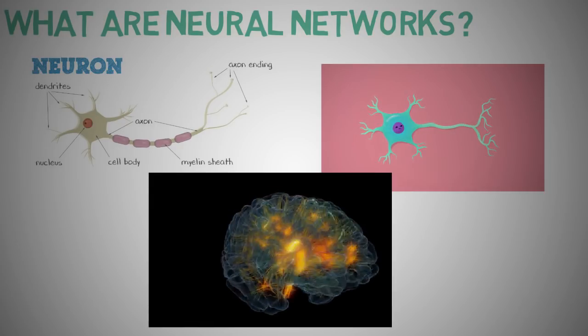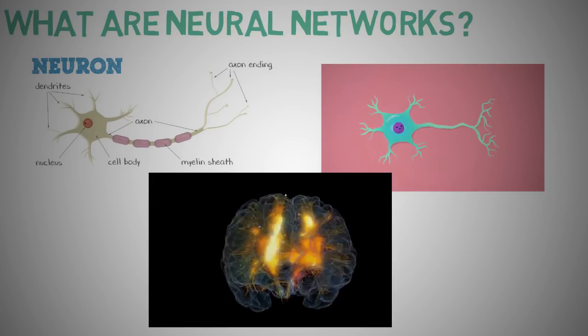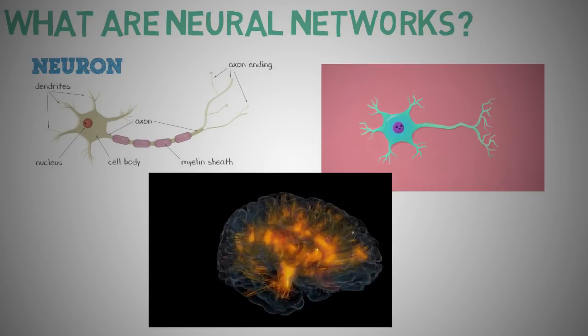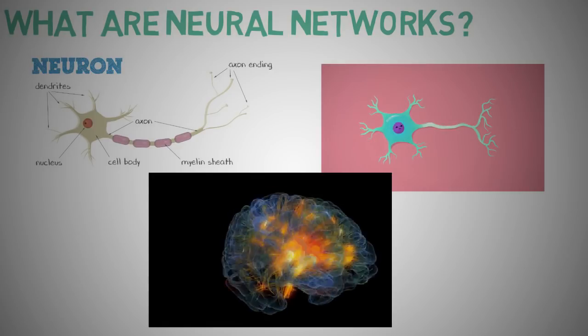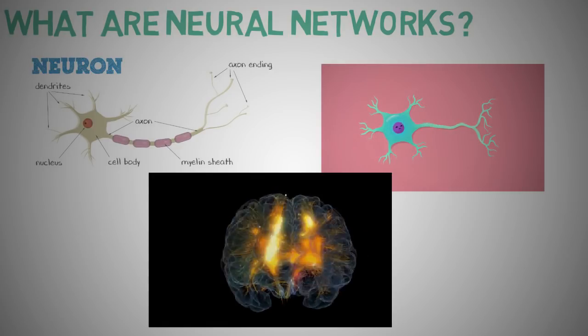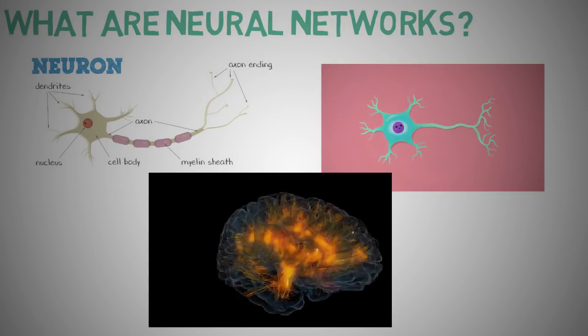In simple terms, each neuron takes input from numerous other neurons through dendrites. It performs the required processing on the inputs and sends other electrical impulses through the axons into the terminal nodes from where it is transmitted to numerous other neurons.